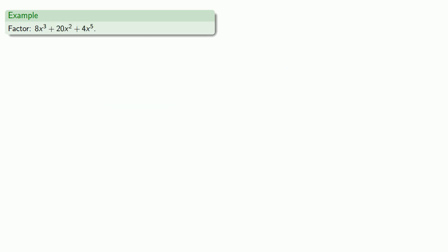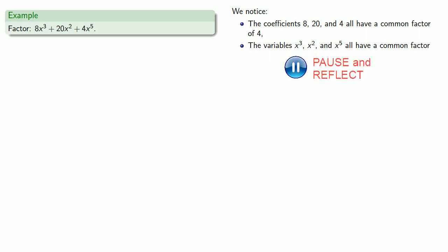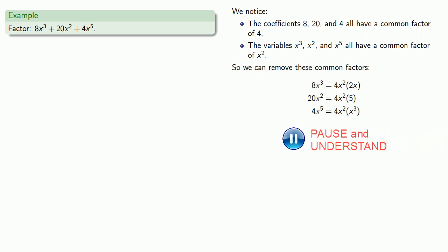Let's train up for the marathon and take slightly longer runs. Let's factor 8X cubed plus 20X squared plus 4X to the fifth. We might begin by noticing the coefficients 8, 20, and 4 all have a common factor of 4. Meanwhile, the variable portions X cubed, X squared, and X to the fifth all have a common factor of X squared. We can remove these common factors. Our sum is 4X squared times 2X plus 4X squared times 5 plus 4X squared times X cubed, and I can remove that common factor and obtain my factorization.